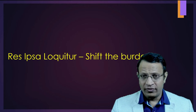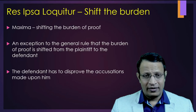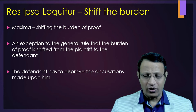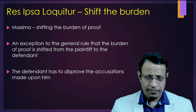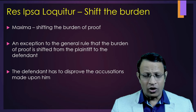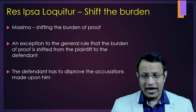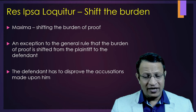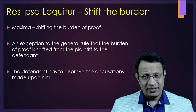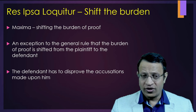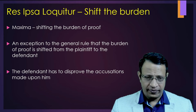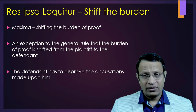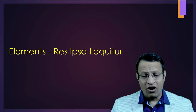Under those circumstances, when Res Ipsa Loquitur is applicable, there is a shift of the burden of proof onto the defendant. As mentioned earlier, if a patient complains against a doctor for poor services, normally the patient has to prove it. But in Res Ipsa Loquitur, the thing speaks by itself — and the doctor has to prove he is not negligent. The plaintiff provides only a prima facie evidence that the doctor is negligent, and that is the exception to the general rule: the burden of proof shifts from the patient to the doctor.